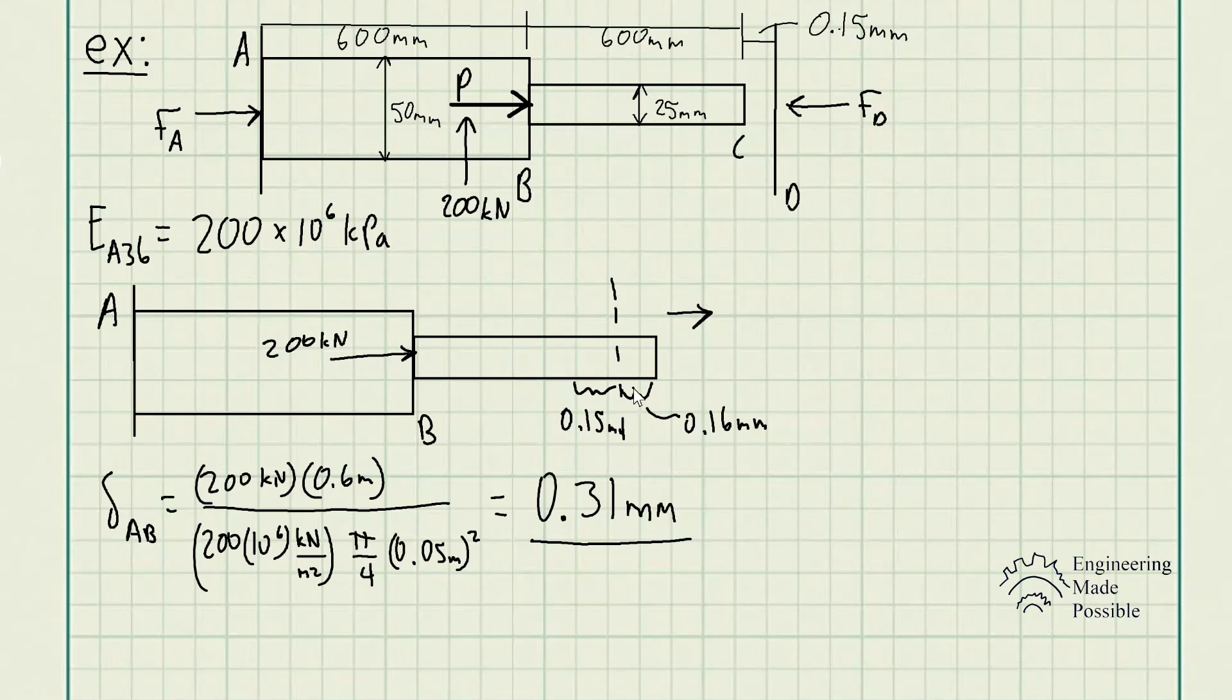The second step would be to determine what force would you require, in this case the reactionary force FD, what force would you require to deform this rod assembly back up to where the wall is? In this case, how much force do you need to deform this assembly by 0.16 millimeters? And doing this, you will actually solve the reactionary force.